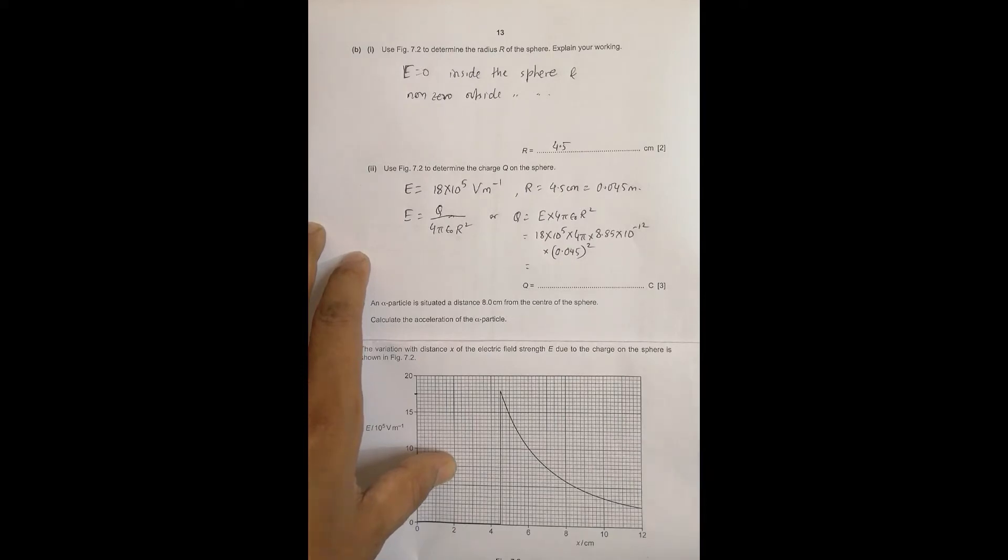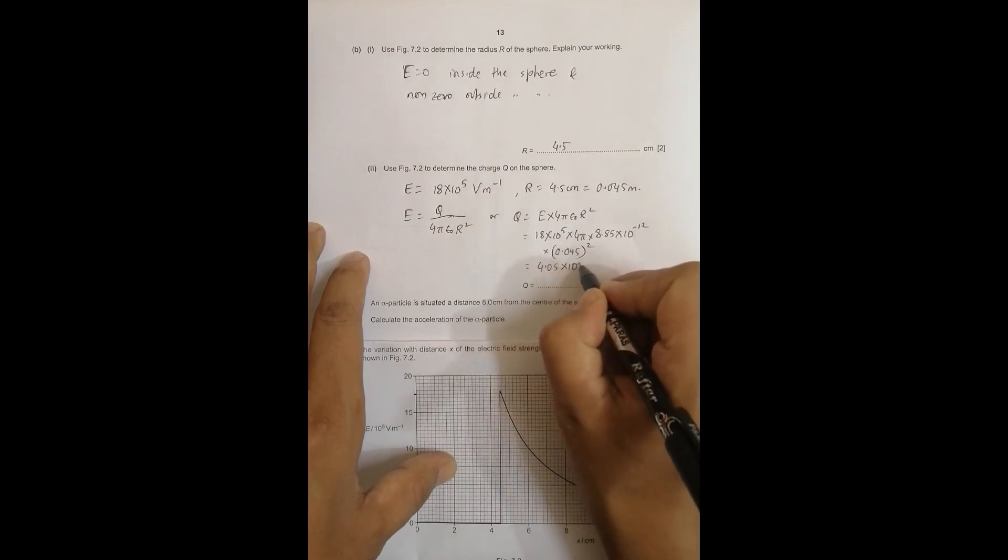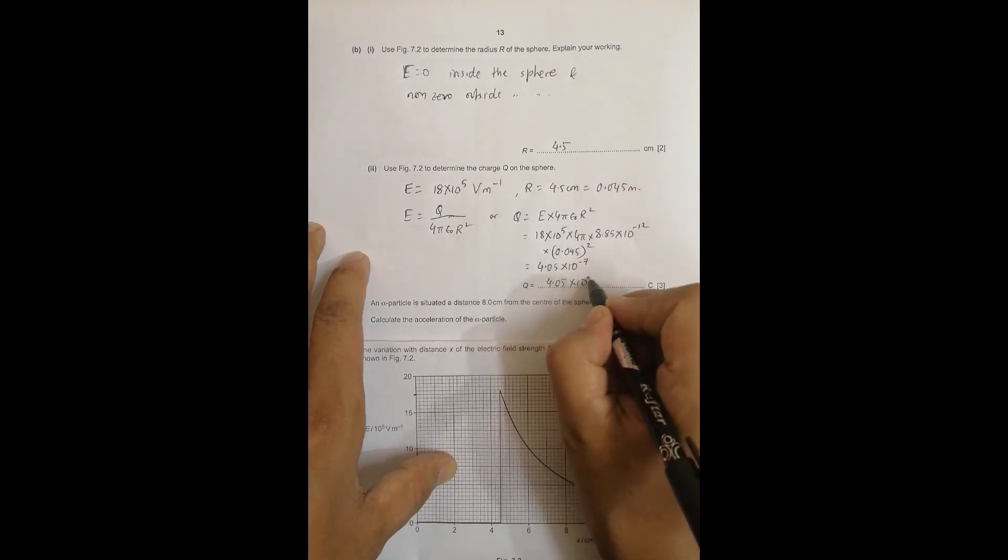Using the calculator: 18 exponent 5 into 4 into pi into 8.85 exponent minus 12 into 0.045 squared. This has come to be equal to 4.05 into 10 to the power minus 7 coulomb, so the value of charge is 4.05 into 10 to the power minus 7 coulomb.